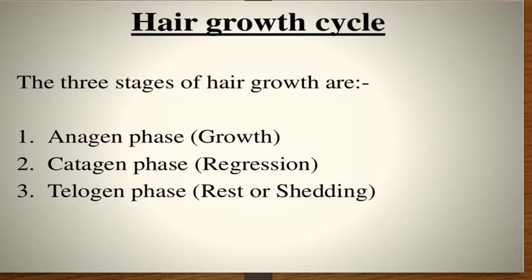The hair growth cycle consists of three stages: the anagen phase (growth phase), the catagen phase (regression phase), and the telogen phase (rest or shedding phase). Hair first grows during the anagen phase for 2 to 6 years, then catagen begins and hair stops growing, followed by the telogen phase where old hairs rest and shed before the cycle begins again.